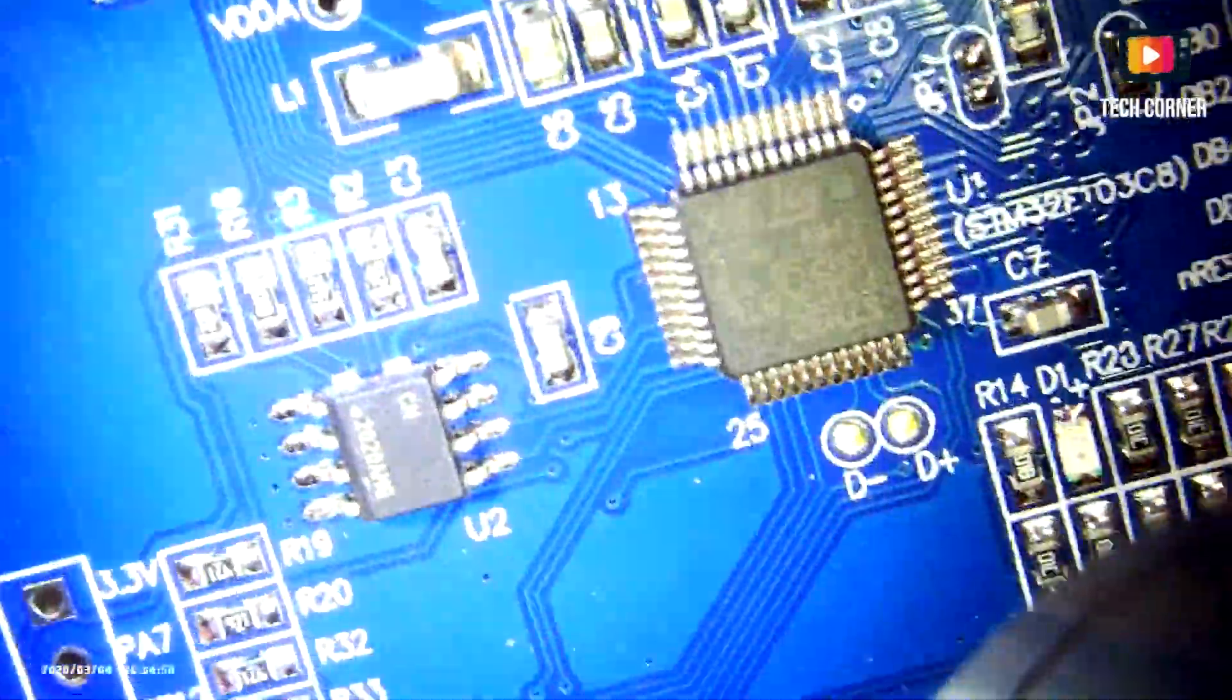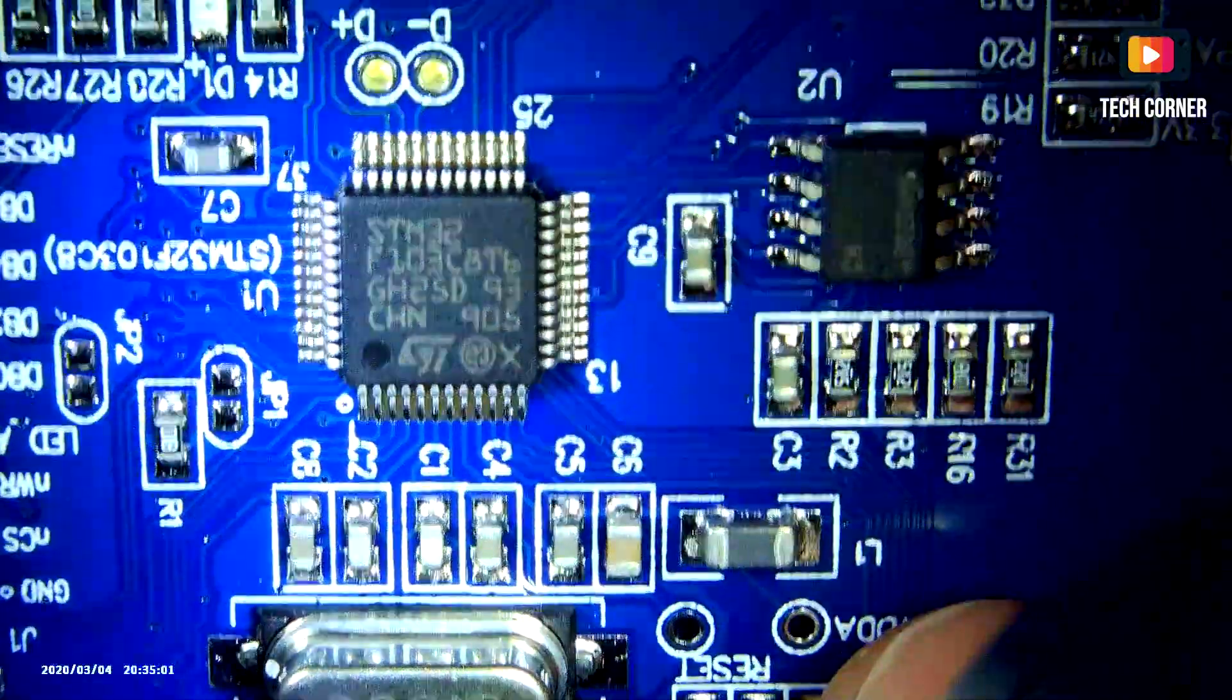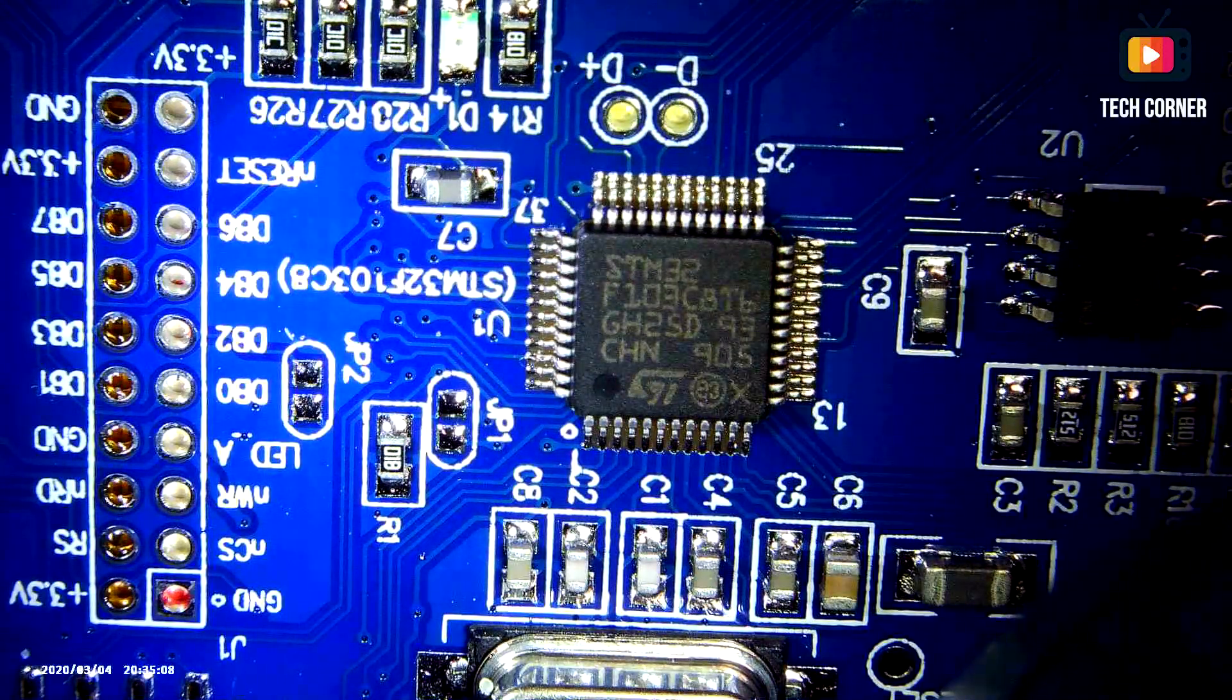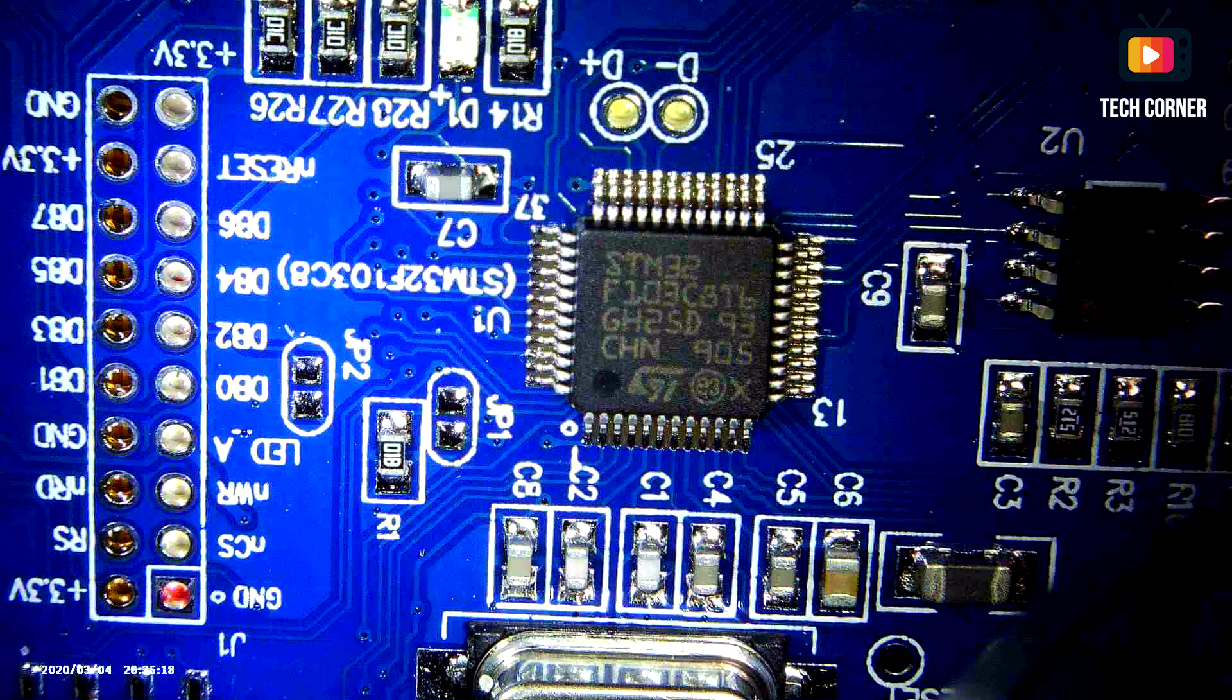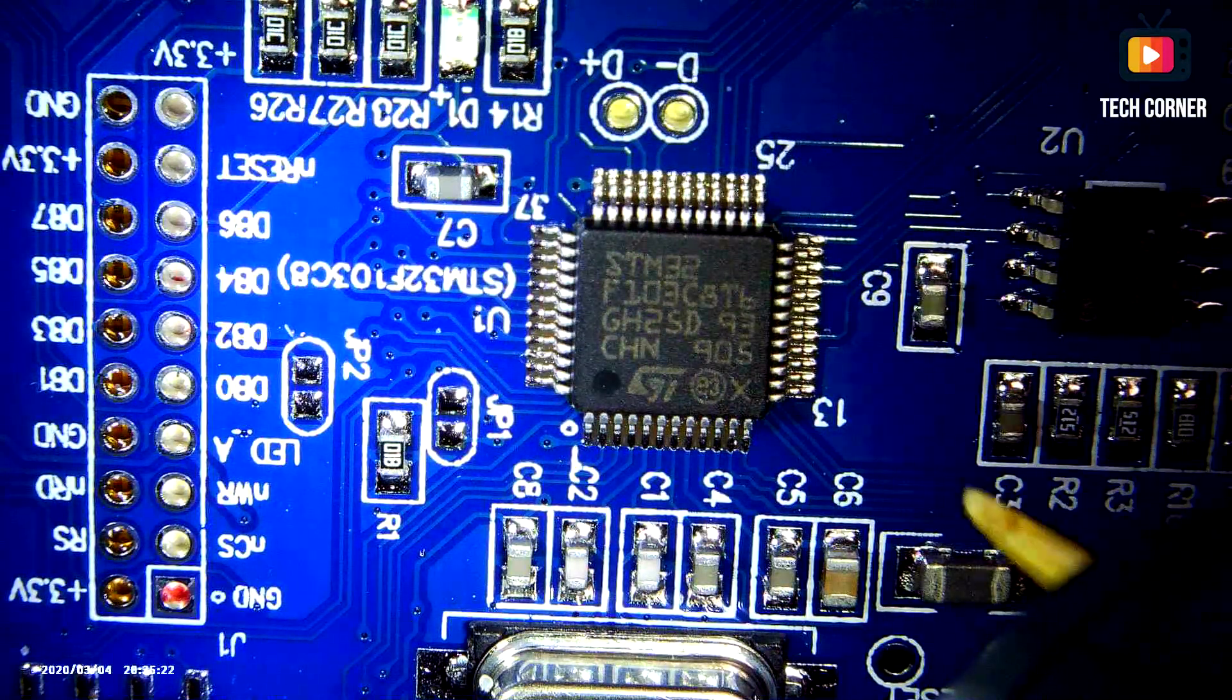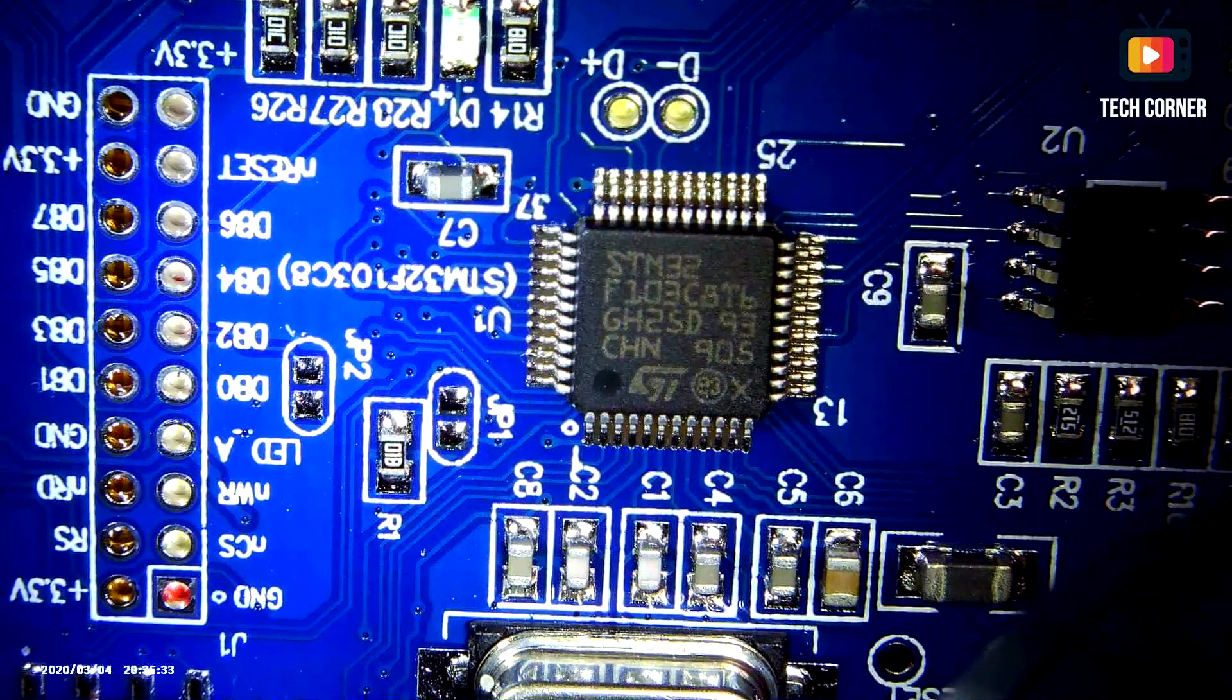So here, we have the STM32F103. This is an ARM Cortex M3 core. It has a maximum CPU speed of 72MHz. And this module, I believe it has 64K of flash memory and 20K for RAM size.